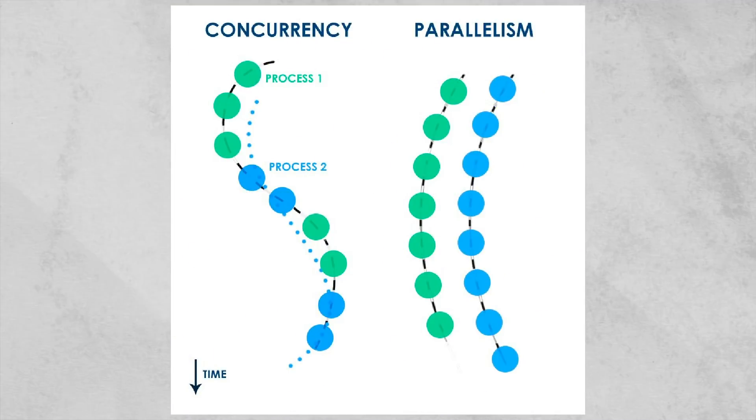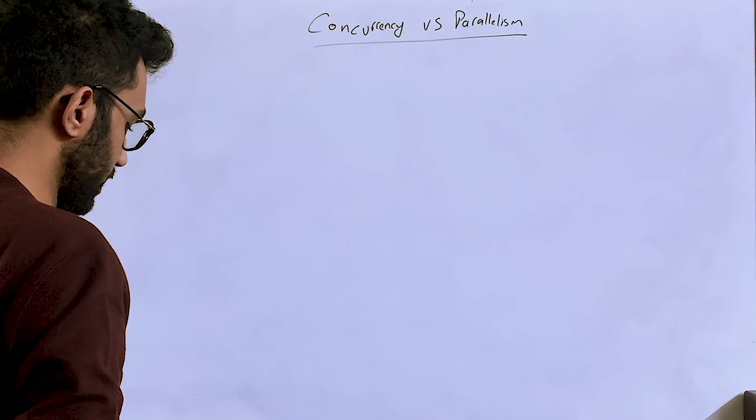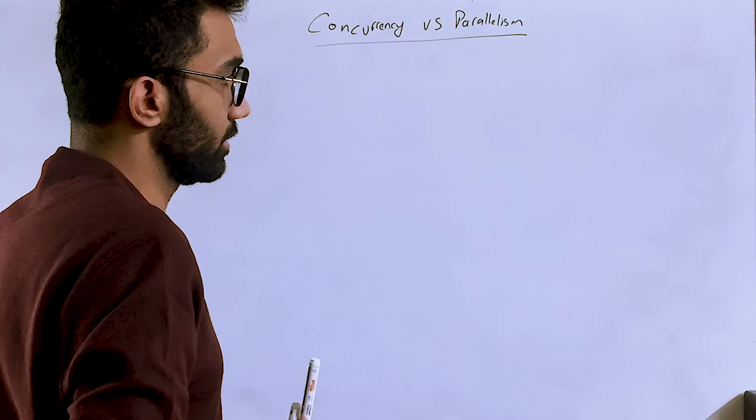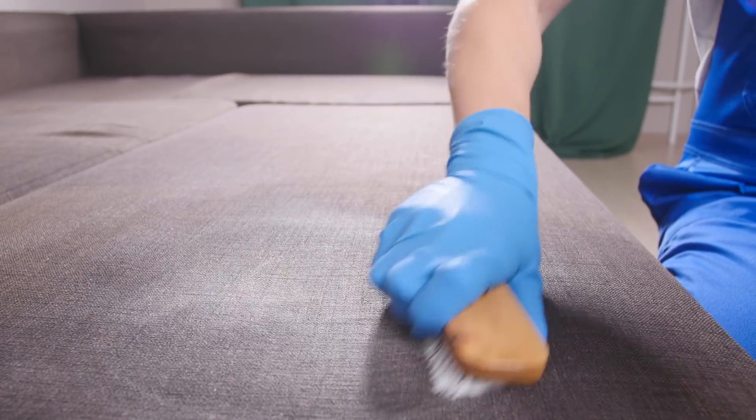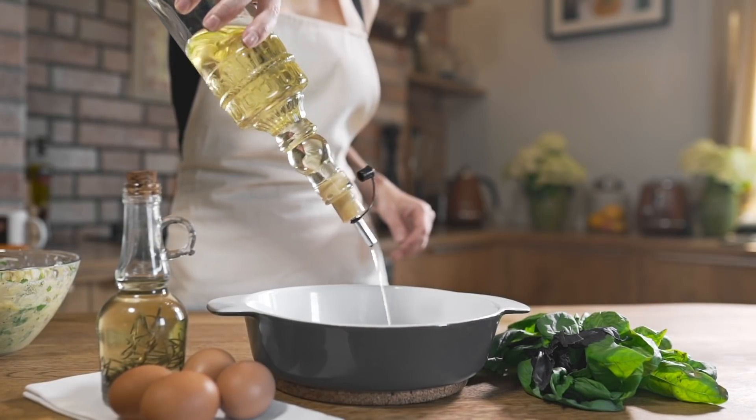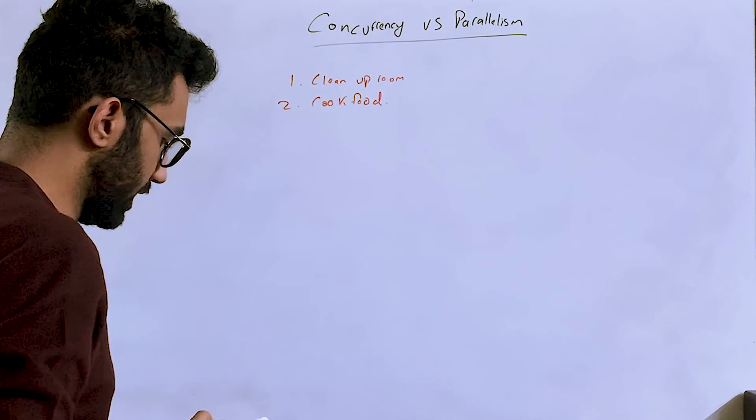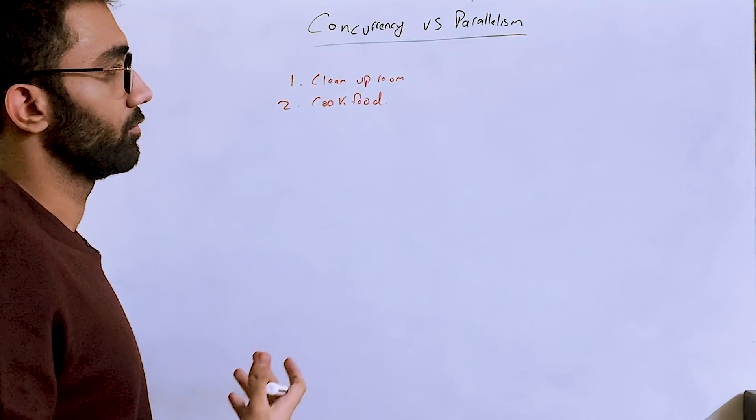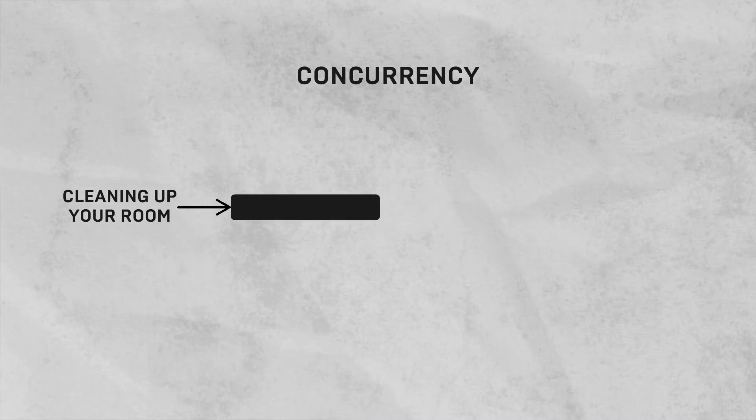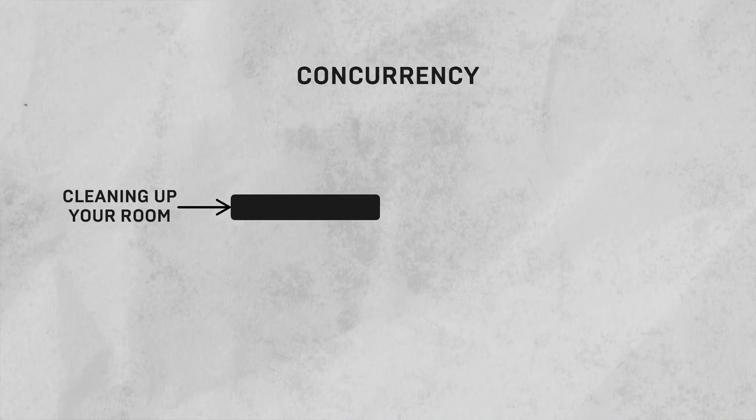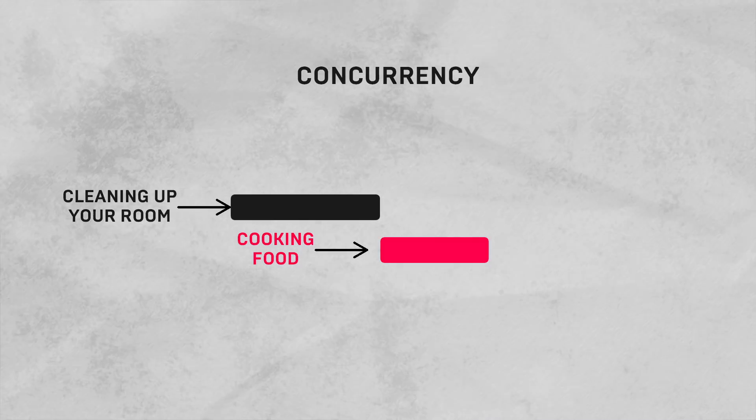Alright, let's start with concurrency versus parallelism. What is concurrency? Let's understand it this way: let's say you're trying to do two tasks—you're trying to clean up your room and you're also trying to cook food. In this case, if I divide your time in terms of availability, this black denotes the time you're spending cleaning up your room, and this red denotes the time you're spending cooking food.